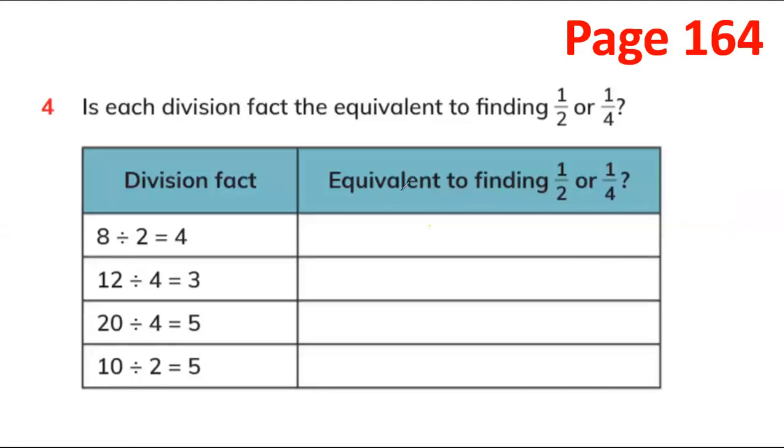You need to write equivalent to finding 1/2 or 1/4. When you see the 2 in the divide it means half, because you have 8 candies you divide into 2 children, so we say it's half. Each boy will get 4 and 4.